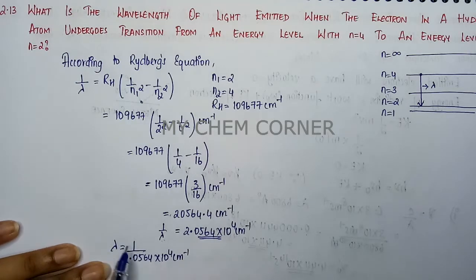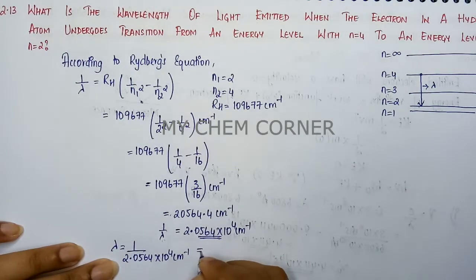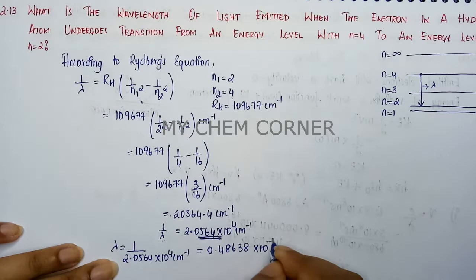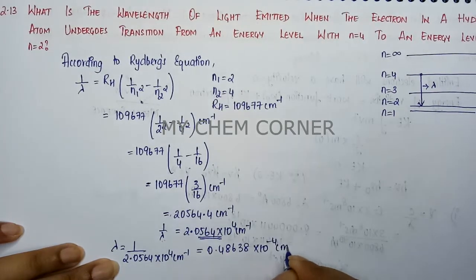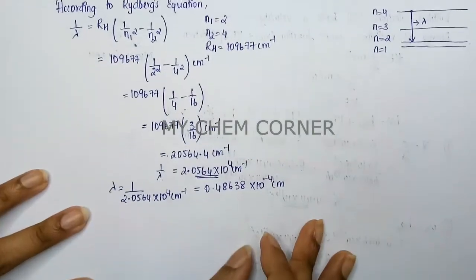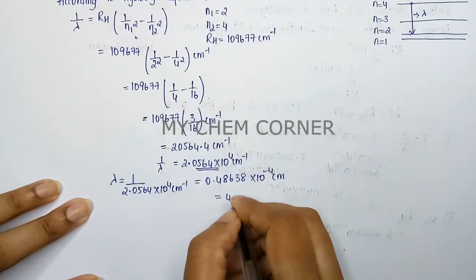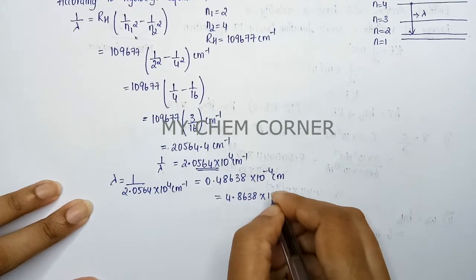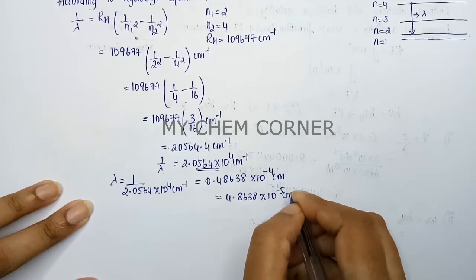When we simplify, we will get 0.48638×10⁻⁴ cm. This itself when we shift the decimal will become 4.8638×10⁻⁵ cm.